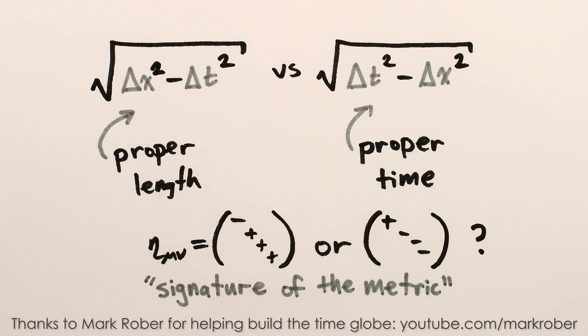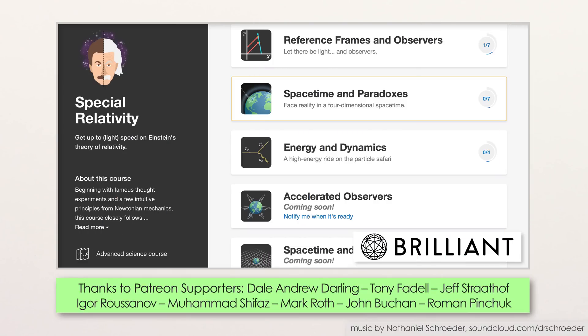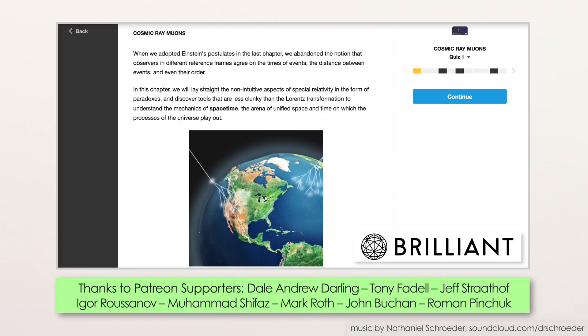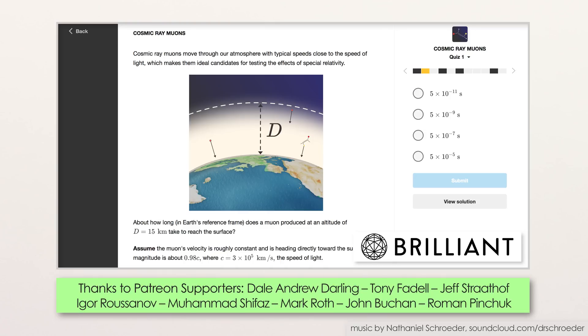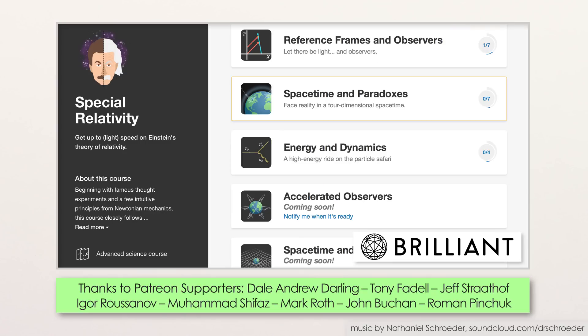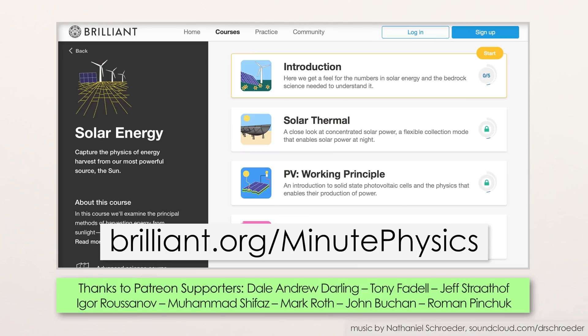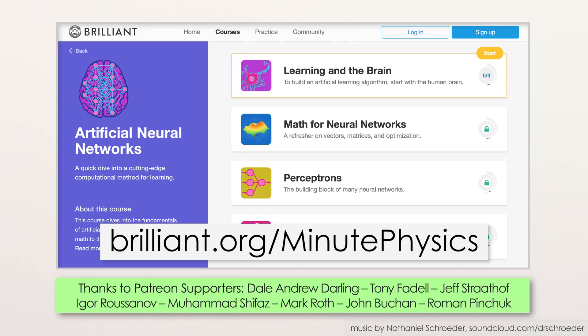And if you want practice using proper time and spacetime intervals to understand real-world problems, I highly recommend Brilliant.org's course on Special Relativity. There, you can apply the ideas from this video to scenarios in the natural world where special relativity really affects outcomes, like the apparently paradoxical survival of cosmic ray muons streaming through the Earth's atmosphere. The special relativity questions on Brilliant.org are specifically designed to help you go deeper on the topics I'm including in this series, and you can get 20% off of a Brilliant subscription by going to Brilliant.org slash MinutePhysics. Again, that's Brilliant.org slash MinutePhysics, which gets you 20% off premium access to all of Brilliant's courses and puzzles, and lets Brilliant know you came from here.